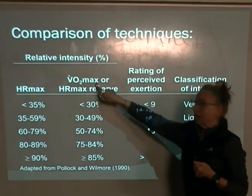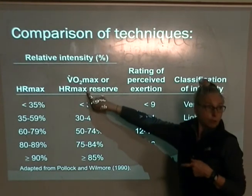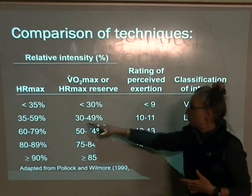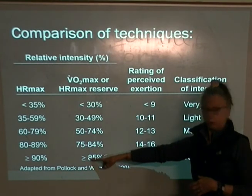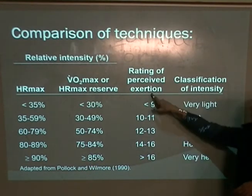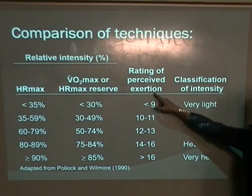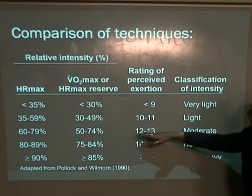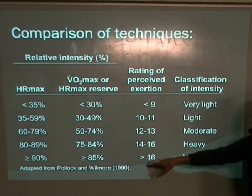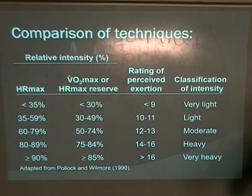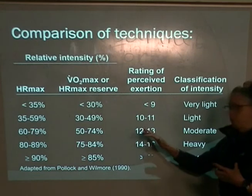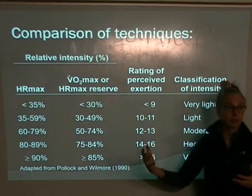For percentage VO2 max or using the Karvonen method the numbers are a little bit lower, as we mentioned. For Ratings of Perceived Exertion on the 6 to 20 scale, you'd be looking at a minimum of 12 on that scale — but I would really prefer you don't use that scale unless you absolutely have to.